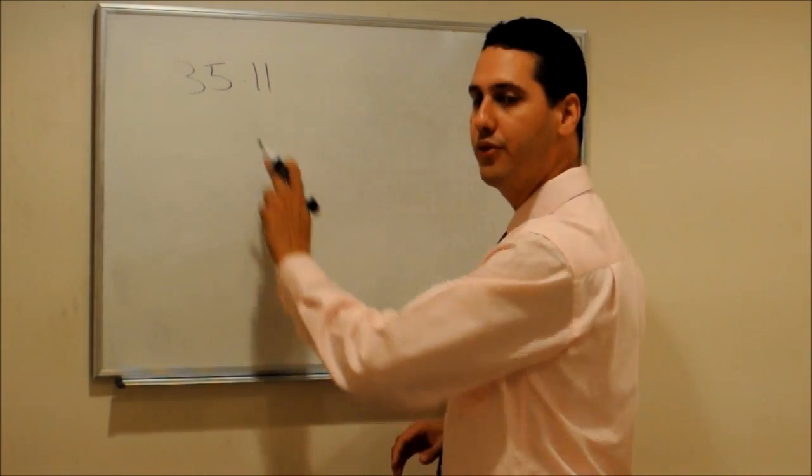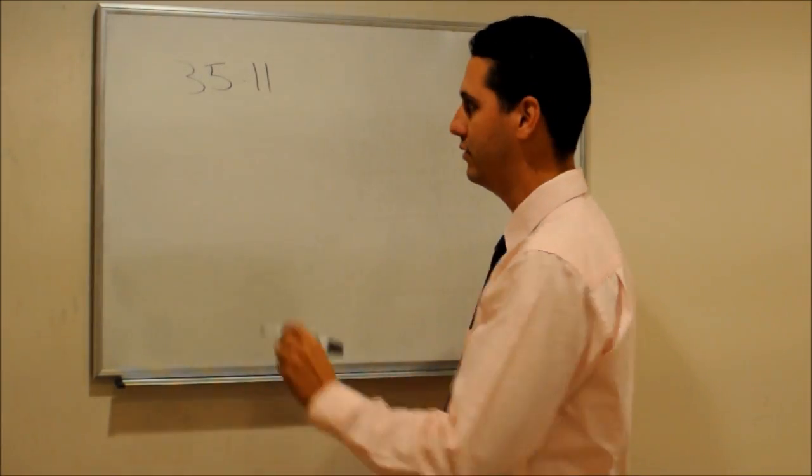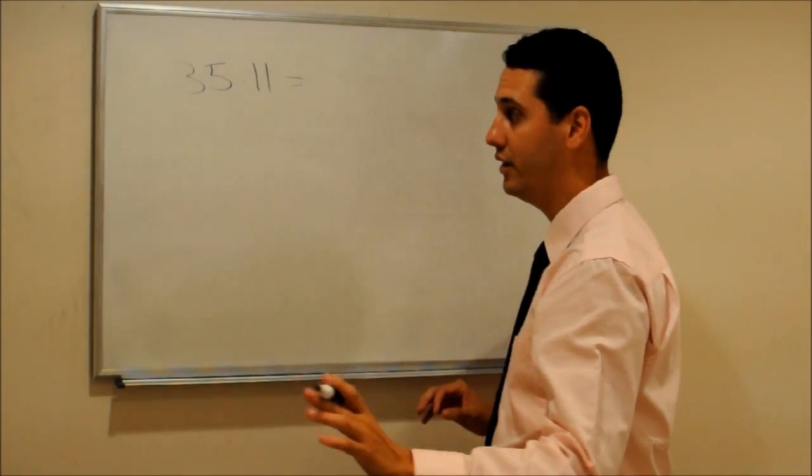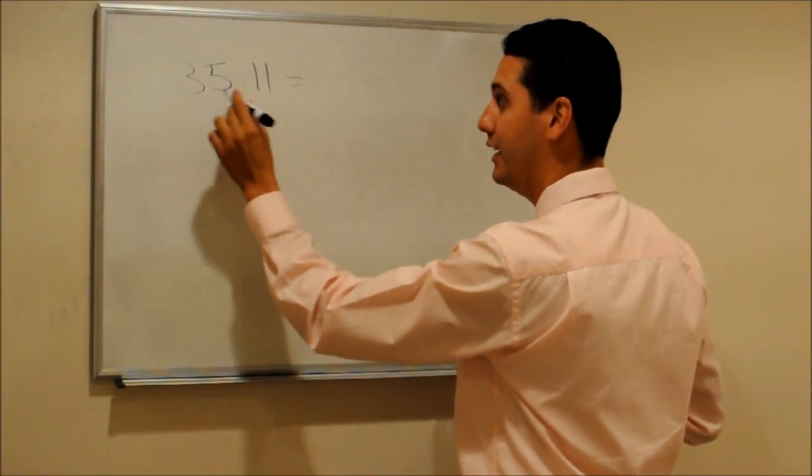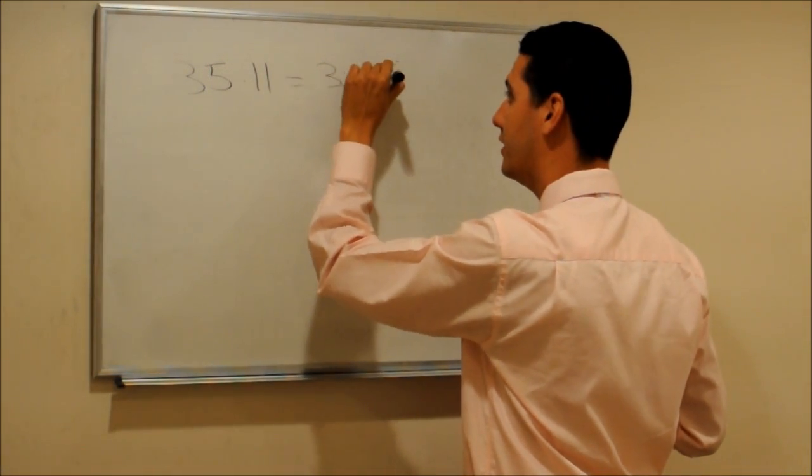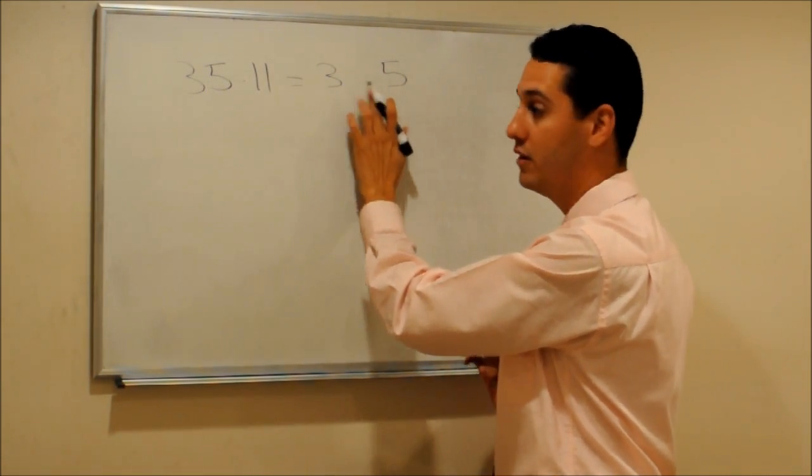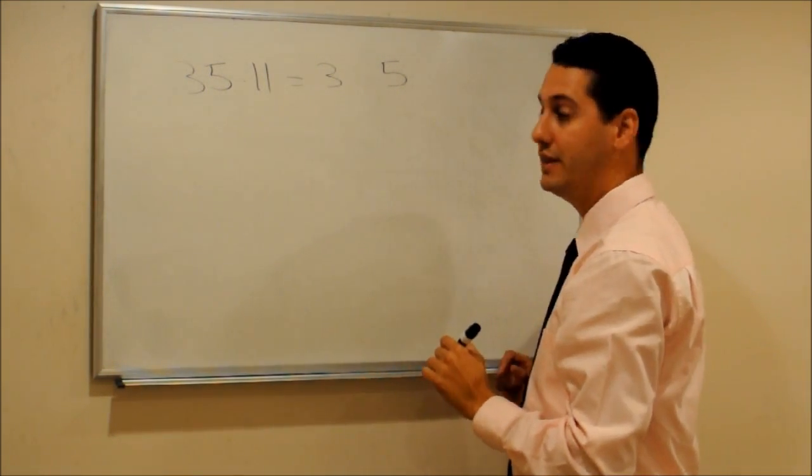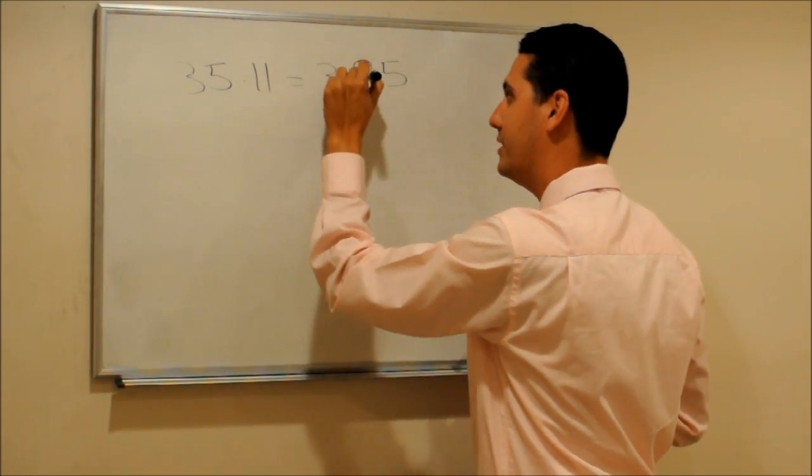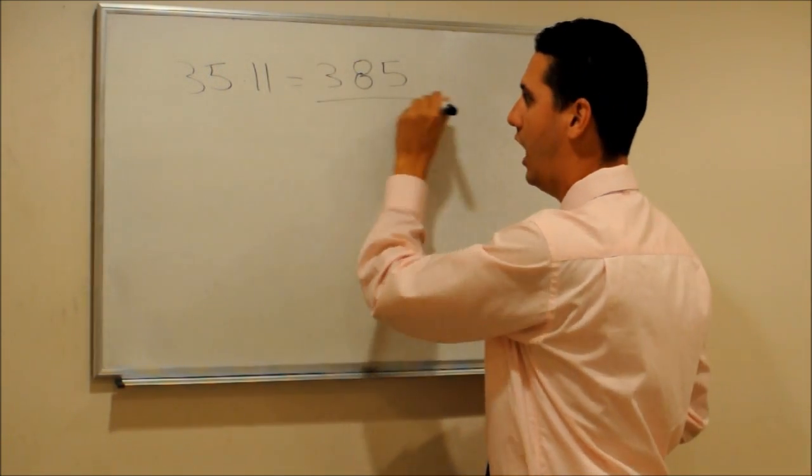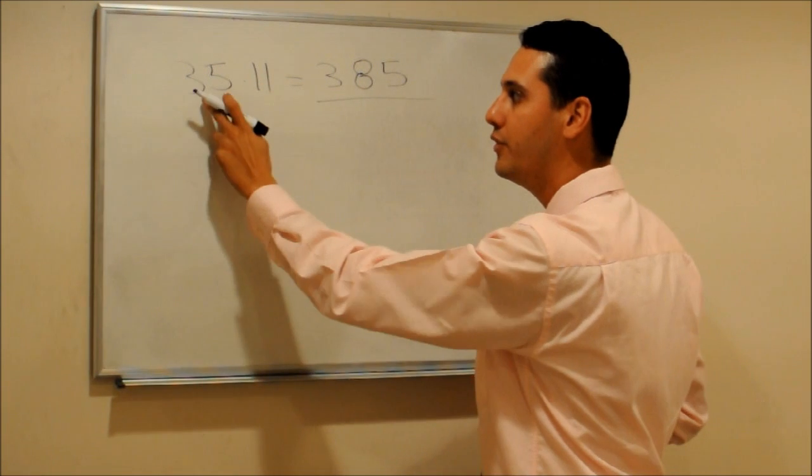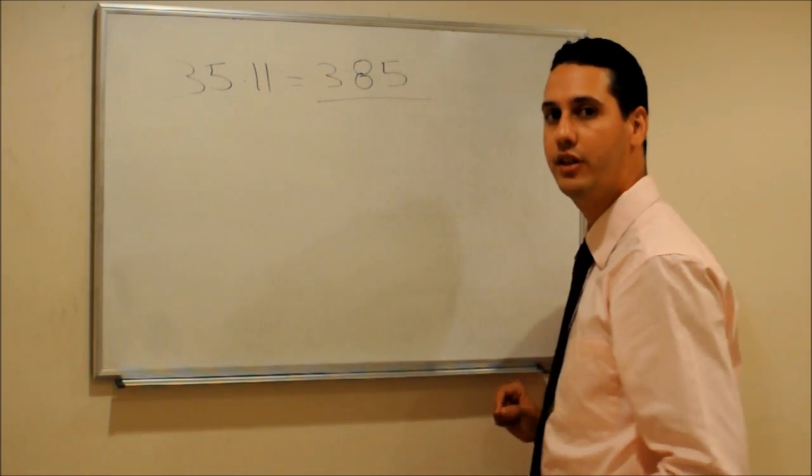For example, we want to multiply 35 times 11. This is the best way to approach the problem. You put the 35 with space, so you leave a little space for the digit in the middle. What is 3 plus 5? The answer is 8. That means that you put 8 in the middle, and that's it. That's the answer. 35 times 11 is 385.